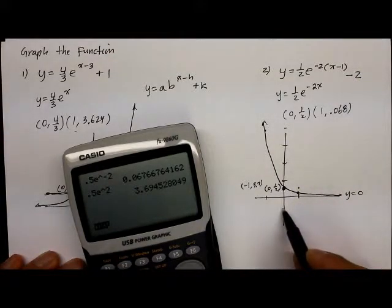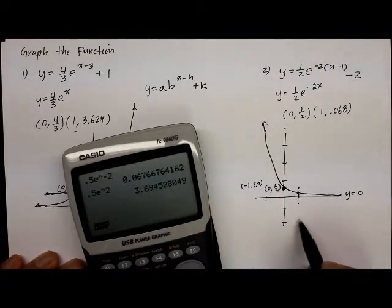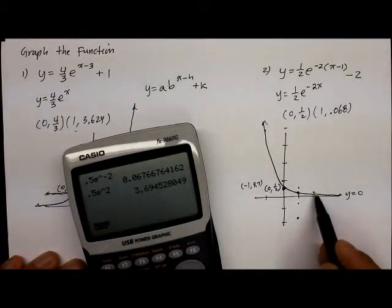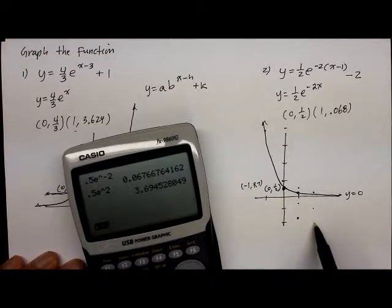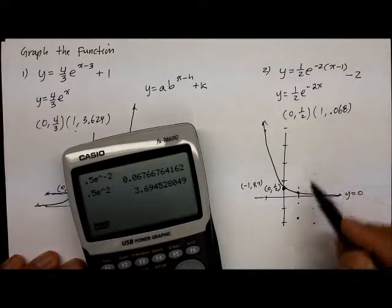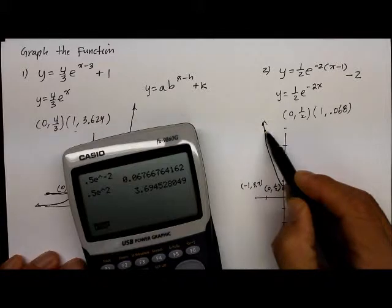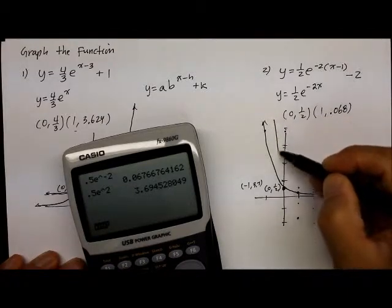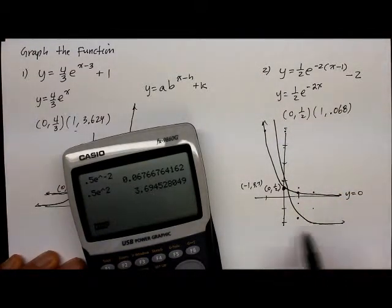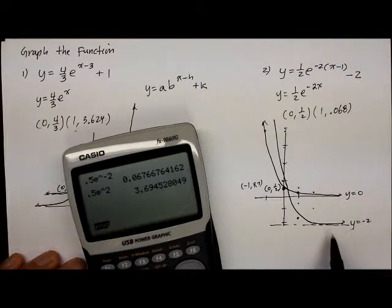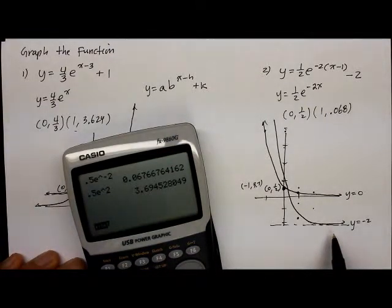But now, the shift is 1 and down 2. So 1, and then 1, 2. Whatever this was, 1, and 1, 2. So it should look something like this, where the new asymptote is now y equals negative 2. I hope this helps. We need to spend a lot more time in the classroom. This is just a little preview of what's to come. Don't get scared, kids. I'll see you then.